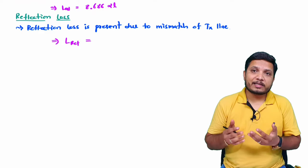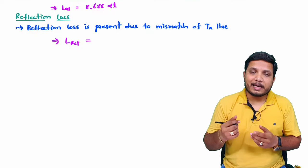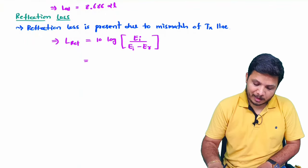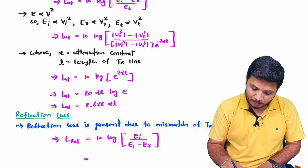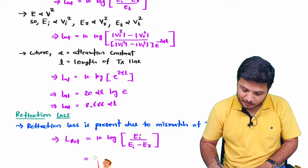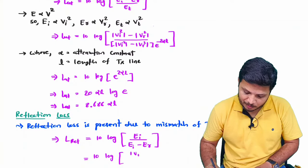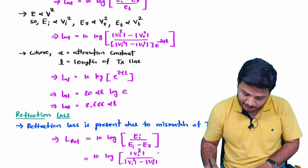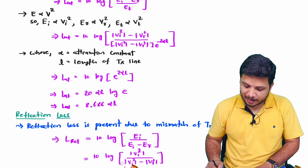When you want to calculate reflection loss in terms of energy, the basic formula is: 10 log of EI divided by (EI minus ER). As energy is proportional to the square of voltage, we can apply that here as well. So this becomes 10 log of VI squared divided by (VI squared minus VR squared). That is how, using energy proportional to voltage squared, we rewrite the formula in terms of voltage.